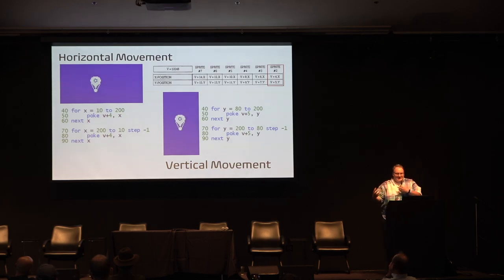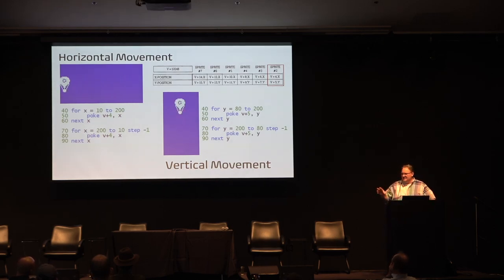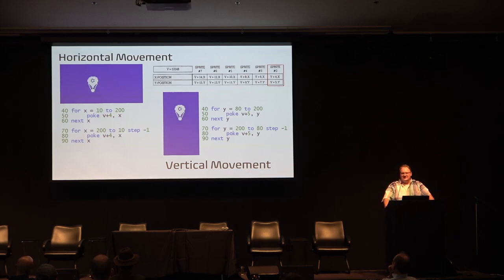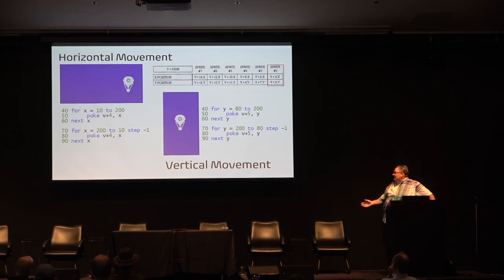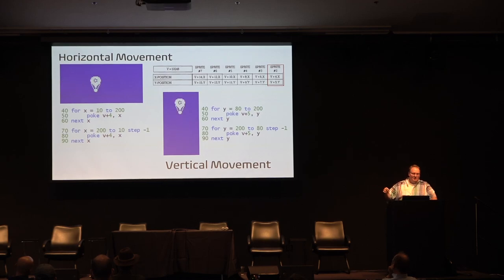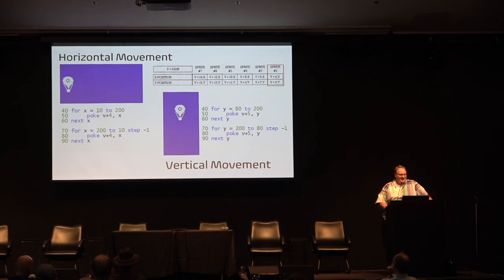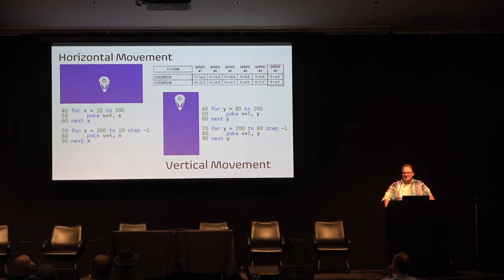The VIC chip has a special magic register — if you know how to put a value in a specific spot, you can move it. In BASIC, here are two examples of how you can control and make horizontal and vertical movement. That's a type of animation — you're moving an object on the screen.